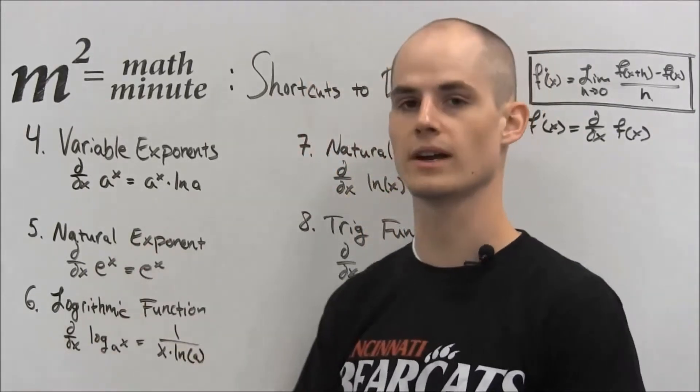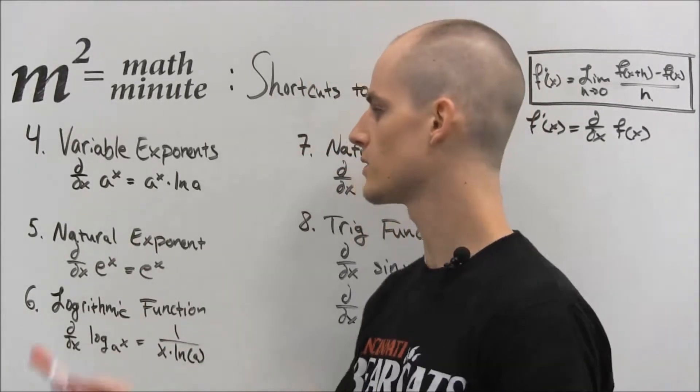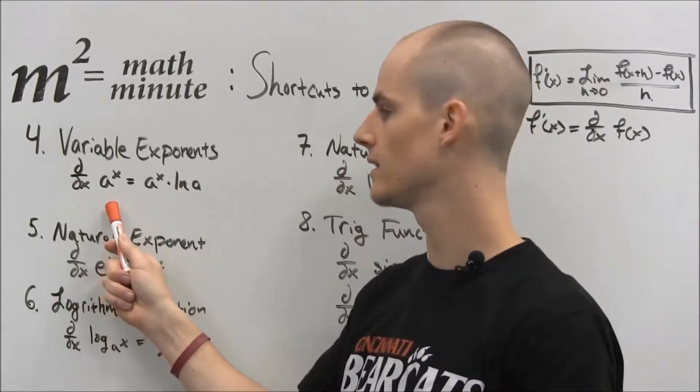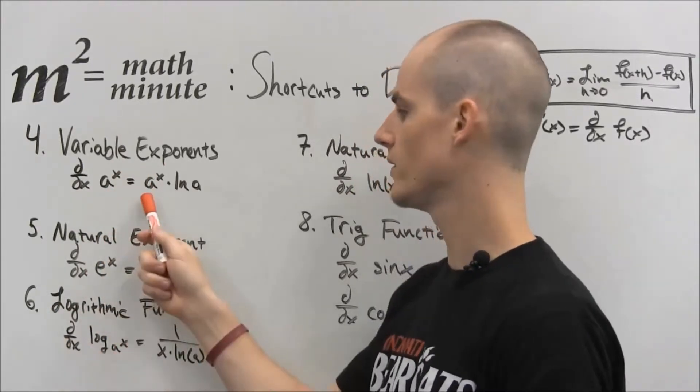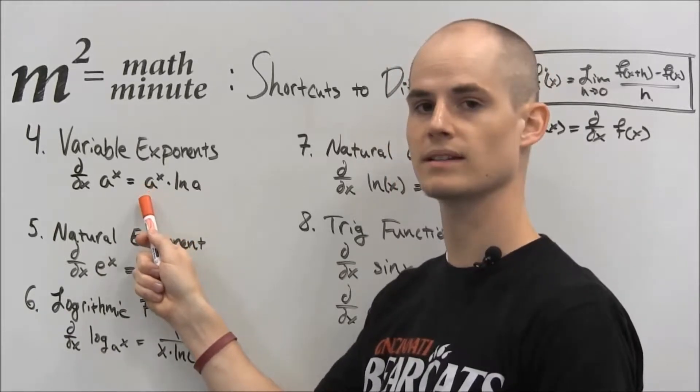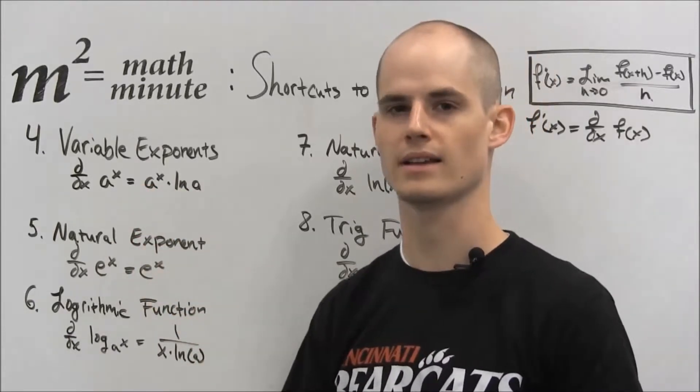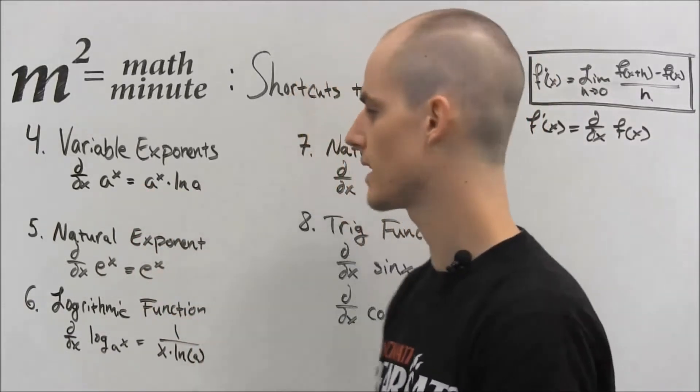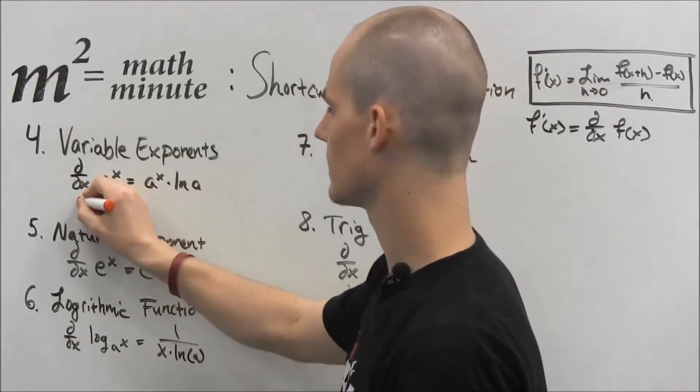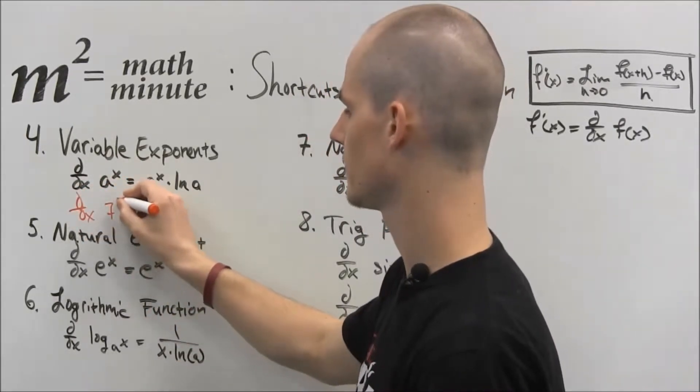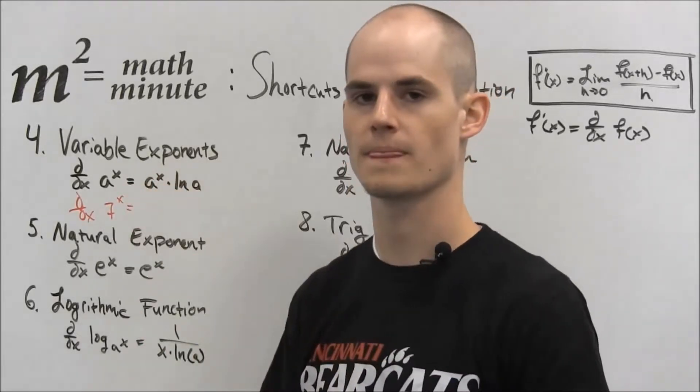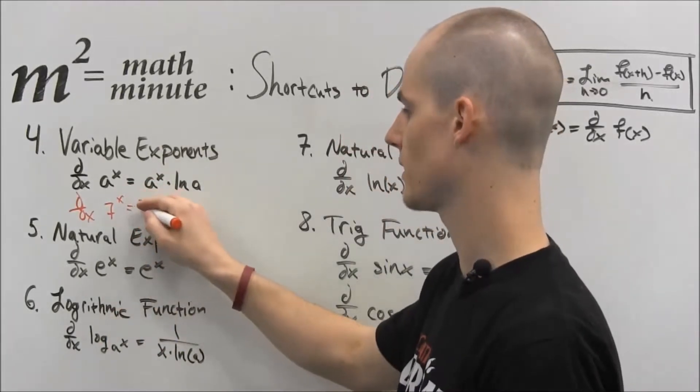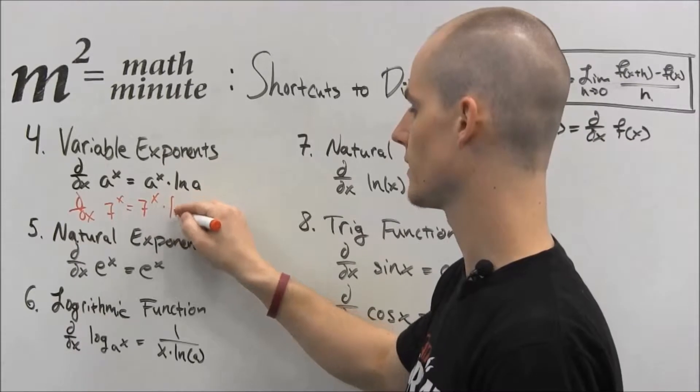So this has to do with variables as exponents. If we have some positive constant a to a power x, this equals that same thing times ln of that base. So a quick example of this is the derivative of let's use seven to the x. Now what this says is it's the exact same thing times ln of seven.